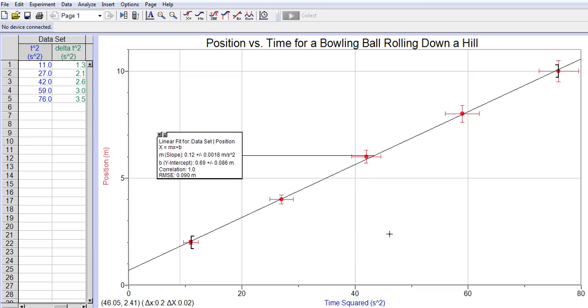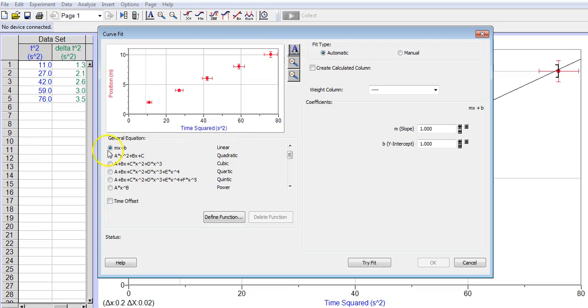The nice thing about Logger Pro 3.10.1 is I can actually put in a manual line and move it around wherever I want. So the first thing I want to do is with the graph open, I want to go under Curve Fit. I want to pick a linear curve because I know I want to put in a maximum sloped line. And then up here under Fit Type, I'm going to pick Manual. Press OK.